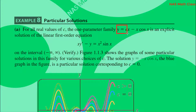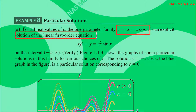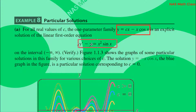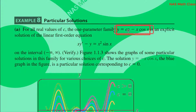For all real values of c, the one-parameter family y = cx - x·cos(x) is an explicit solution of the linear first-order equation. This is a linear first-order equation, and the solution y = cx - x·cos(x) is its explicit general solution.